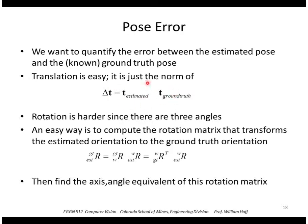So we just take the norm or Euclidean length of that vector. The rotation, though, is harder because there's three angles. However, we can essentially get that down to one angle by finding the axis angle equivalent of the difference matrix.